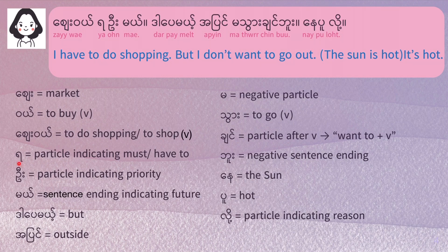How about 'Ya'? 'Ya' is a particle that indicates that you have to or you must do something. So if you say 'See way ya me,' it means 'I have to go shopping' or 'I have to do shopping.'